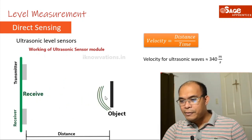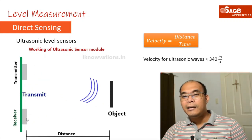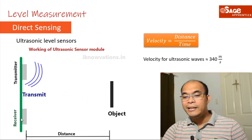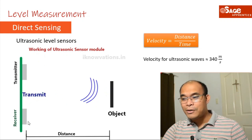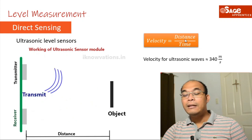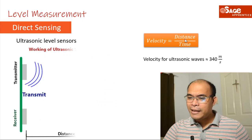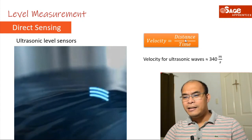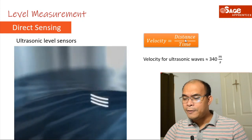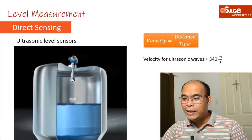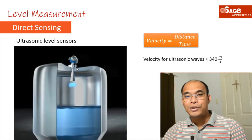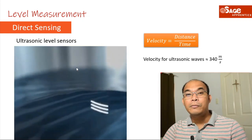You start a timer when the signal is sent and measure the time it takes to travel from the transmitter to the object and back to the receiver. From the known velocity and measured time, we can solve for the distance. For example, the ultrasonic sensor transmits a signal, the echo reflects, and the receiver picks it up. This is how ultrasonic level sensors measure level, especially in closed tanks.